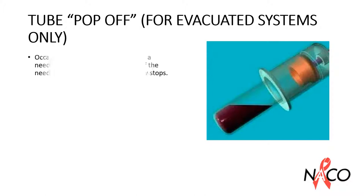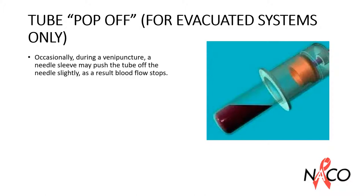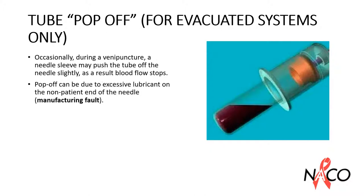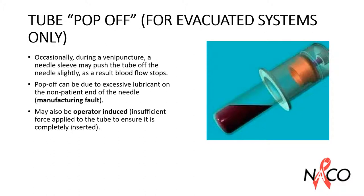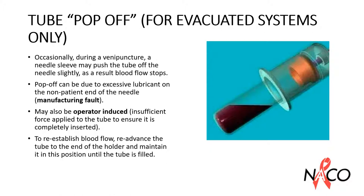Occasionally during a venipuncture, a needle sleeve may push the tube off the needle slightly, as a result of which blood flow stops. Pop-off can be due to excessive lubricant on the non-patient end of the needle — a manufacturing fault — or a faulty MSN sleeve, also a manufacturing issue. It may also be due to the operator applying insufficient force to the tube to ensure it is completely inserted onto the non-patient needle. To re-establish blood flow, re-advance the tube to the end of the holder and maintain it in this position until the tube is filled.